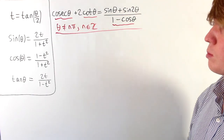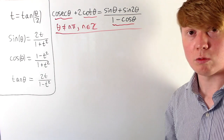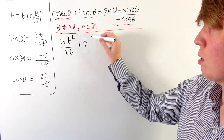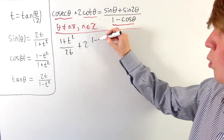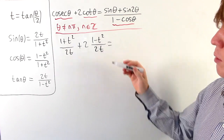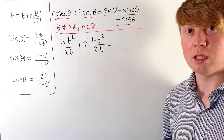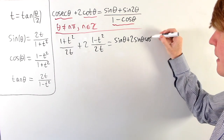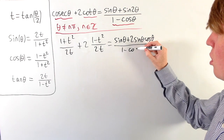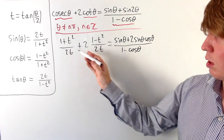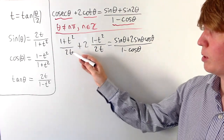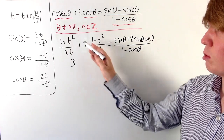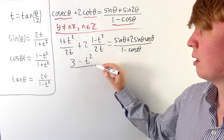Now let's apply the t-substitution. For cosec(θ), we use the reciprocal of the expression for sin(θ), giving (1 + t²)/(2t). Adding 2·cot(θ), we take the reciprocal of tan(θ), giving 2 × (1 − t²)/(2t) on the left-hand side. We combine these over the common denominator 2t: the numerator becomes 1 + t² + 2(1 − t²) = 3 − t², giving (3 − t²)/(2t) on the left-hand side.